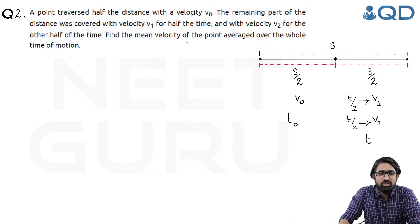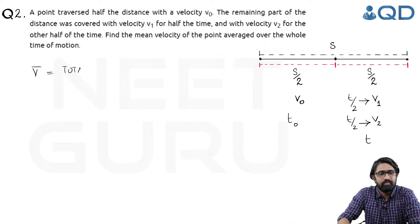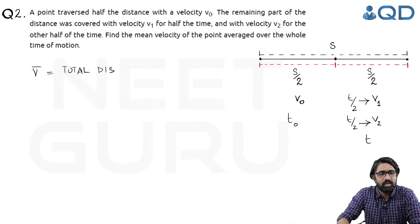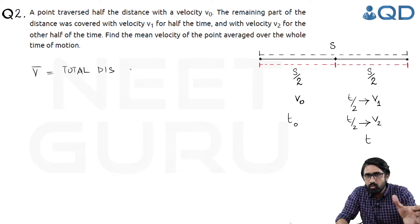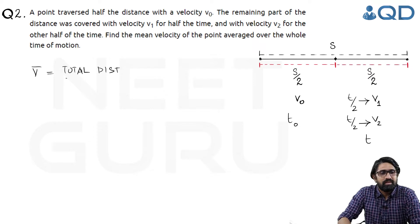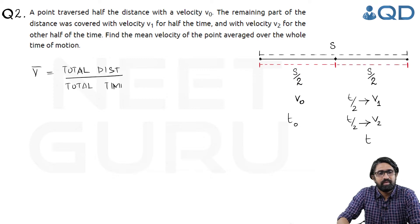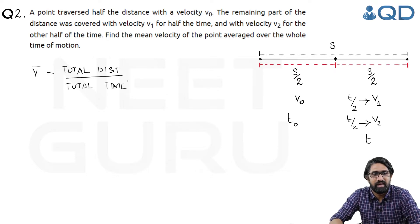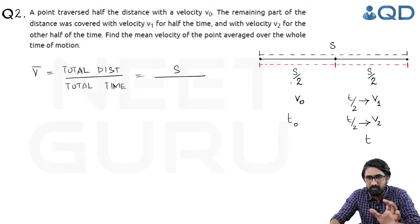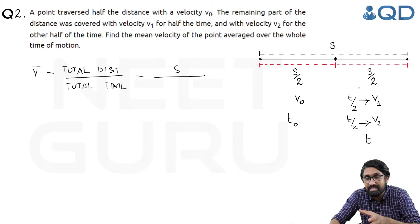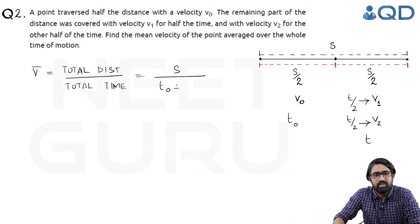To find the average velocity v-bar, we find the total distance or displacement — because this is straight-line motion in one direction, both are the same — divided by total time. Total distance is simply s. Divided by total time, that is t0 for the first half of the journey plus t for the remaining half, giving t0 + t.